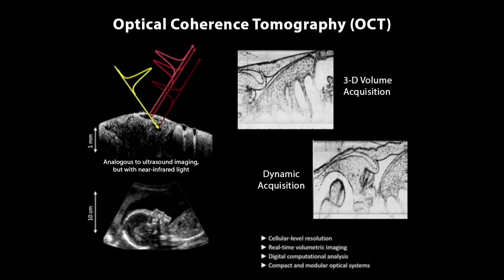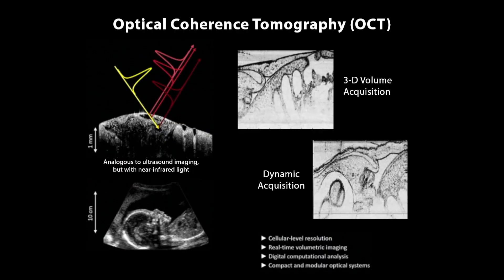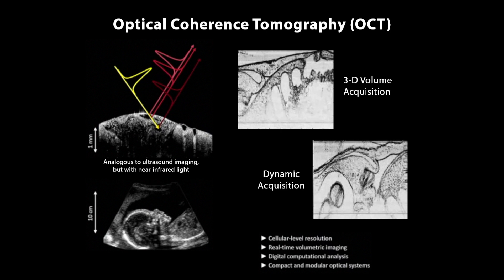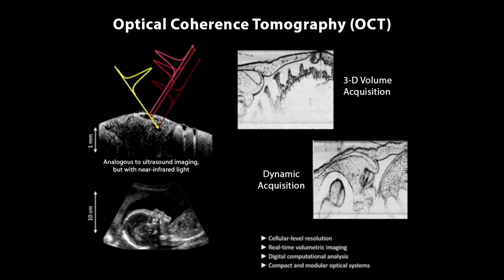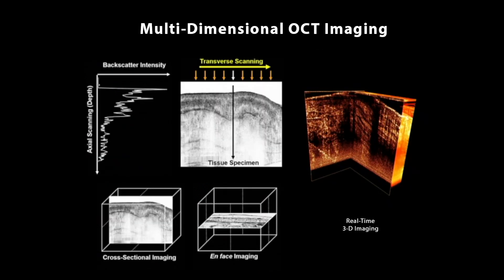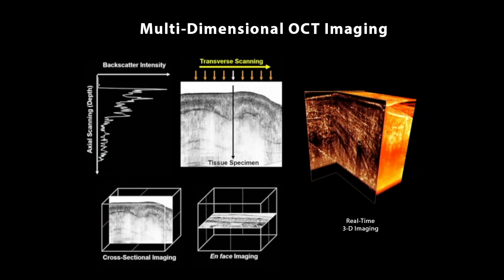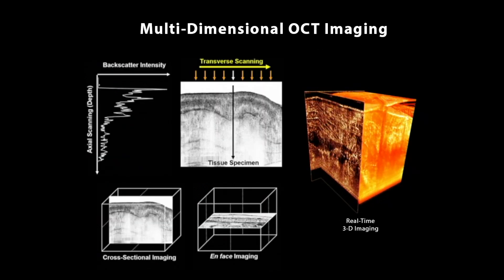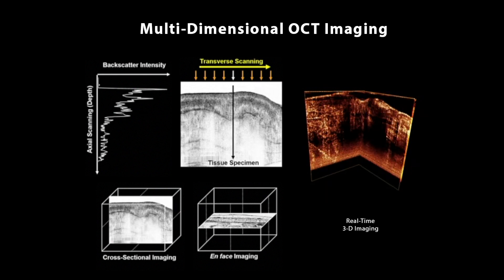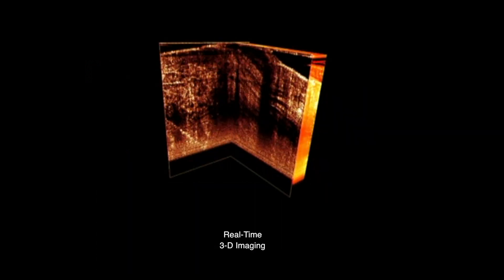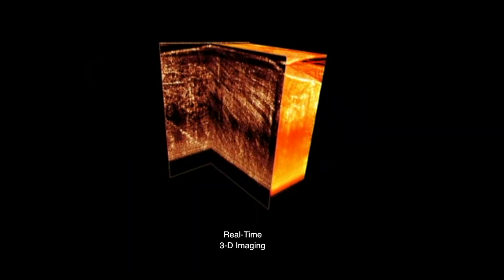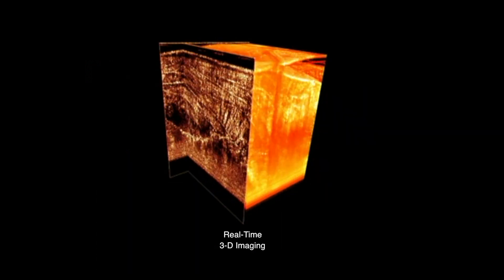One example is OCT. OCT, or optical coherence tomography, works a lot like ultrasound does, but it uses light instead of sound on a scale that's microscopic, so we can really see small features.